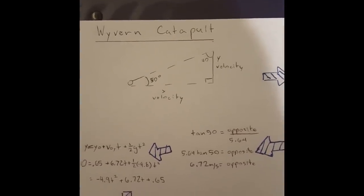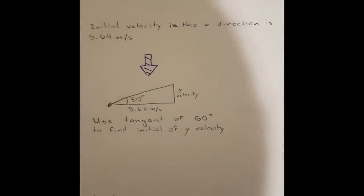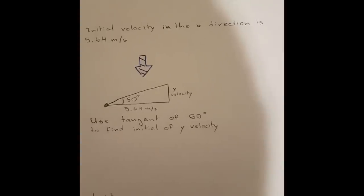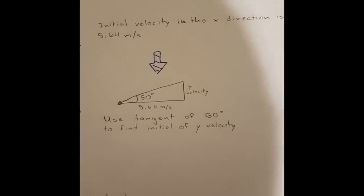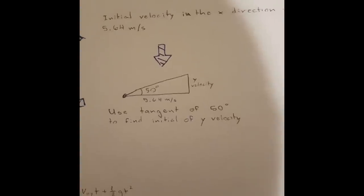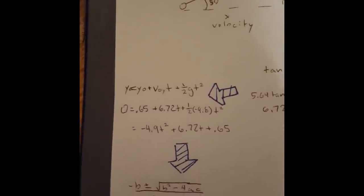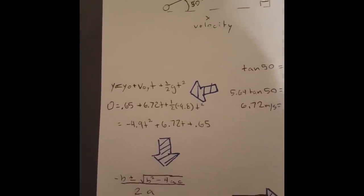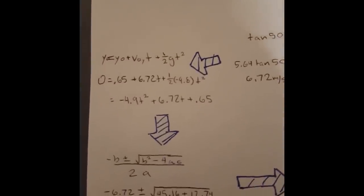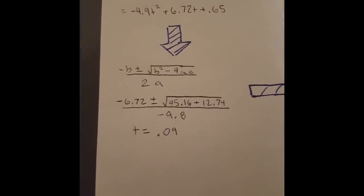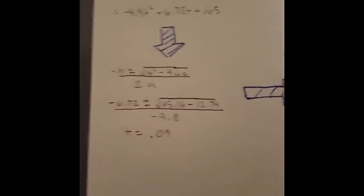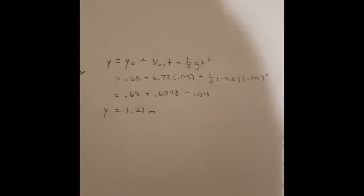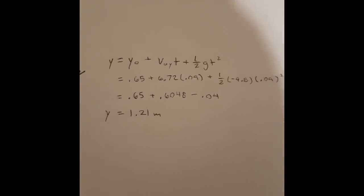The Y1 catapult is shot at a 50-degree angle with an initial velocity of 5.64 meters per second in the x direction. With this, you can find the initial velocity of Y using tangent of 50 degrees. Once the Y initial velocity is found, you can plug that into y = y₀ + v₀t + ½gt², rearranged into standard form to plug into the quadratic formula to get the time. Once the time is found, you plug it back into that equation.